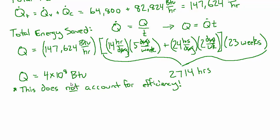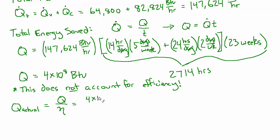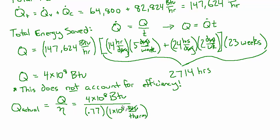The actual fuel required is larger than the building heat loss, so the savings will be even more. To account for efficiency and convert to therms: Q-actual equals Q-loss divided by efficiency, so 4 times 10 to the 8th BTUs divided by 0.77, then divided by 100,000 BTUs per therm. BTUs cancel and we get 5,203 therms of heating gas saved each year.